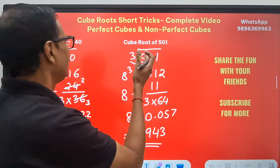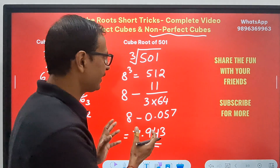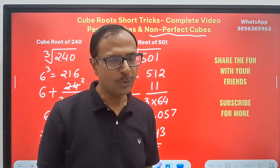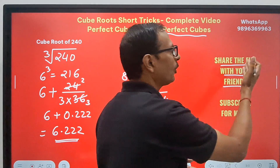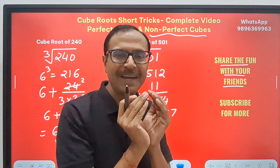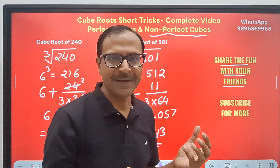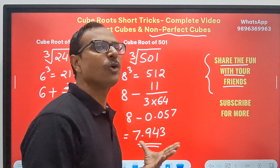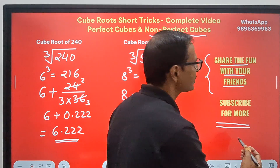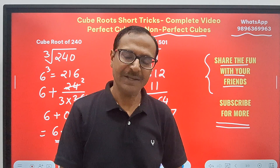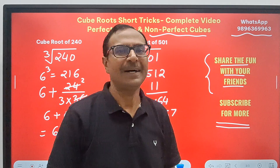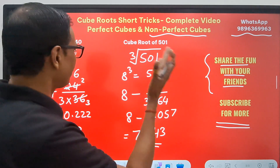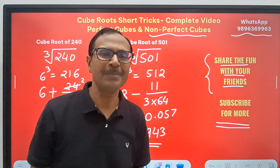Friends, you can practice with 20 or 30 such non-perfect cube numbers and you will get an approximately correct answer. This is something exclusive which you can hardly find anywhere on the internet, in books, or in YouTube videos. Don't forget to share with your friends — this knowledge should reach the masses so they are better equipped for competitive exams. Do subscribe for more such videos. Send me a message on WhatsApp if you want the entire compilation of short tricks as a PDF. All the best for your practice of this amazing concept of finding cube roots of non-perfect cube numbers!